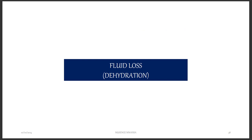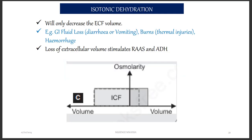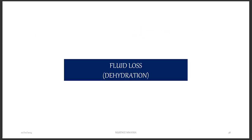The first type of fluid loss is dehydration. Dehydration is the loss of fluid, and when we talk about where we are losing fluid from, we mostly talk about plasma — fluid lost outside the cell, not inside the cell. The first type of dehydration is isotonic dehydration. The term isotonic means equal in concentration — you are losing fluid that has a concentration equal to the concentration inside the cell.